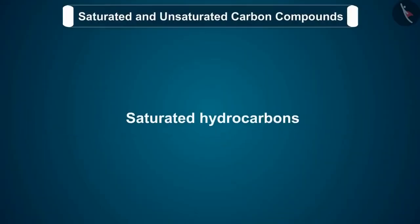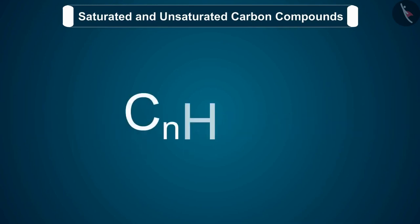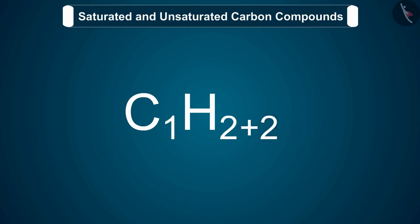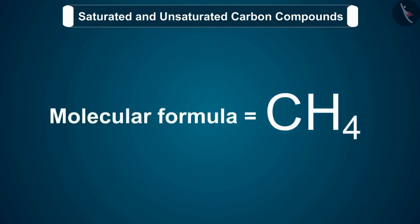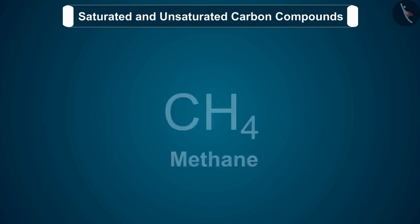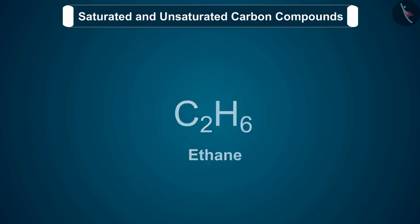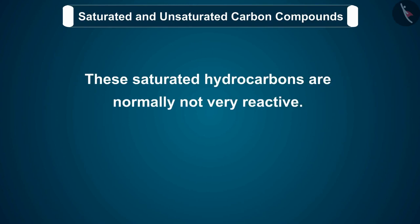Let's discuss saturated hydrocarbons with the help of examples. If an alkane has one carbon atom in its molecule, when n equals 1, its molecular formula according to the general formula becomes CH4, which we call methane. Similarly, if we take n equal to 2, we get ethane. These saturated hydrocarbons are normally not very reactive; that is, they are quite unreactive.